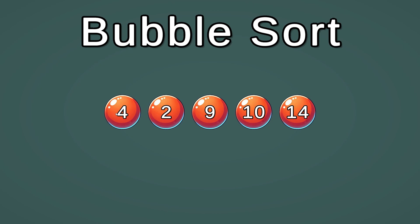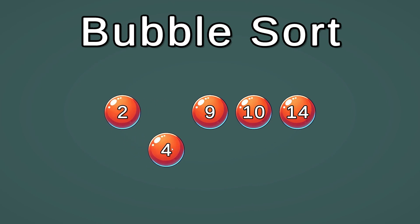The last two elements are 4 and 2, so they need to be swapped. And just like that, we have sorted this array using bubble sort. Thanks for watching — if you are interested in learning more algorithms, you should watch the next video.